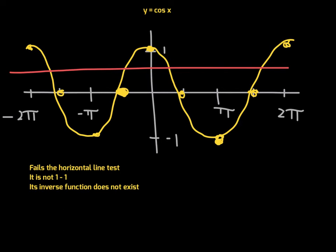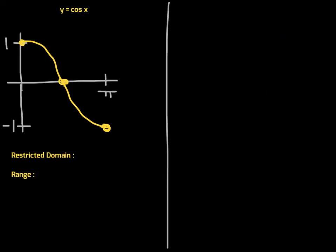We restrict the domain for cosine of x from x = 0 to x = π. Over that restricted domain, highlighted in blue, this function will be one-to-one, it will pass the horizontal line test, and it will have an inverse. The restricted domain is from zero to pi only, and the range is still negative one to positive one.